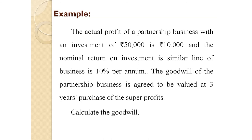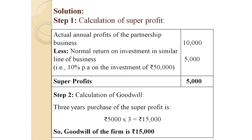We follow two steps. Step one: calculate super profit. Actual annual profit = ₹10,000. Less: normal return on investment = 10% on ₹50,000 = ₹5,000. Super profit = ₹5,000. Step two: calculate goodwill = three years' purchase of super profit = ₹5,000 × 3 = ₹15,000. So goodwill of the firm is ₹15,000.